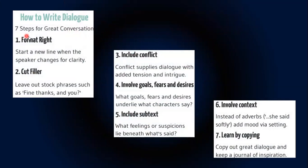How to write dialogue. Form it right: start a new line when the speaker changes for clarity. Cut filler: leave out stop phrases. Include conflict: conflict supplies dialogue with added tension and intrigue. Involve goals, fears, and desires — consider what goals, fears, and desires underlie what characters say. Include subtext: consider what feelings or suspicions lie beneath what is said.